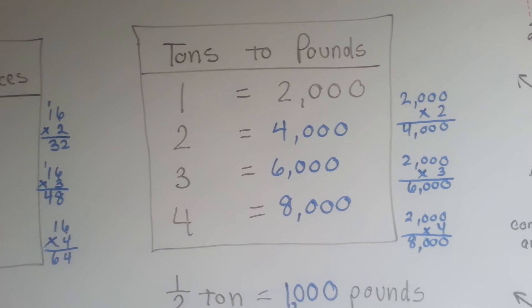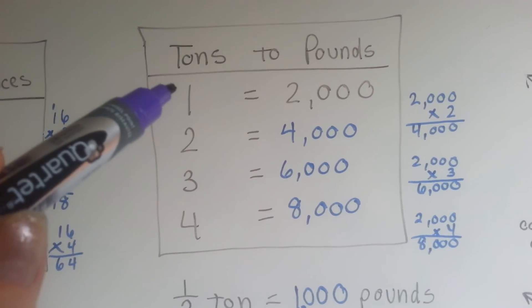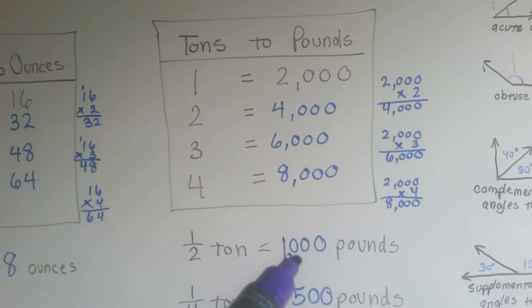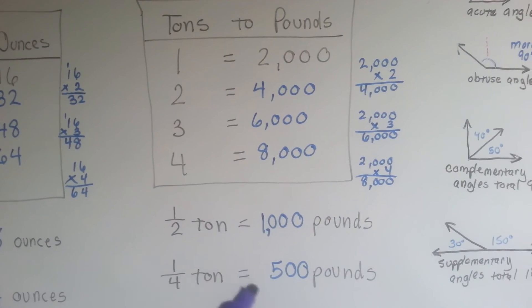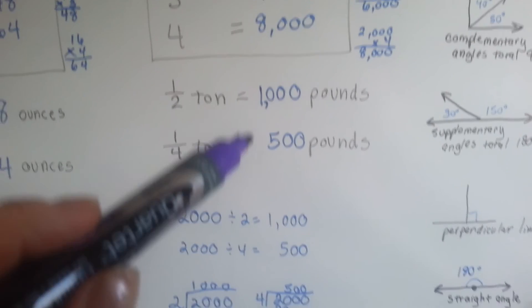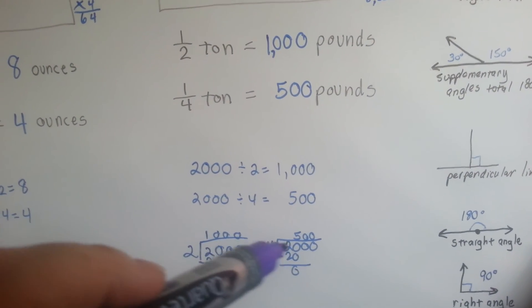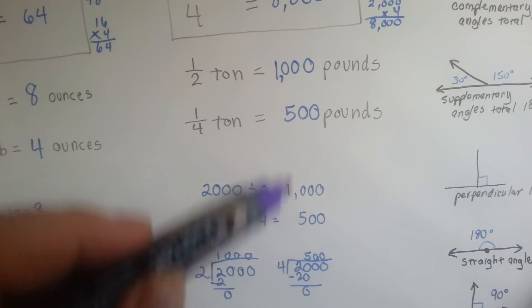But what about a half a ton? If one ton is two thousand pounds, what's a half a ton? What's half of two thousand? One thousand. One thousand and one thousand makes two thousand. How about a fourth of a ton? It would be five hundred. Because two thousand divided into four parts would be five hundred. So one-fourth, one part of four would be five hundred.